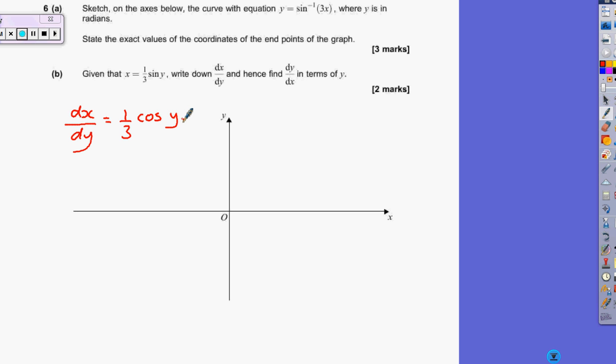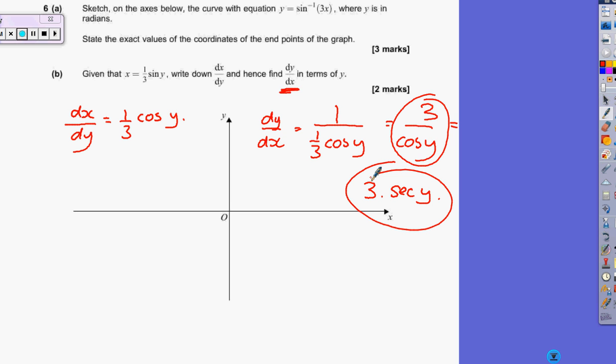But they don't want dx by dy, they want dy by dx. So we're going to flip everything upside down. So dy by dx is going to equal 1 over a third cos of y, which will give you 3 over cos y, which is also the same as 3 lots of sec y. Either this one or this will give you the full two marks. And that's number 6. Done.